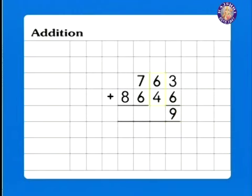6 plus 4 is 10. So, 0 goes down and carry over 1. Then, 1 plus 7 plus 6 is 14. So, 4 goes down and carry over 1.